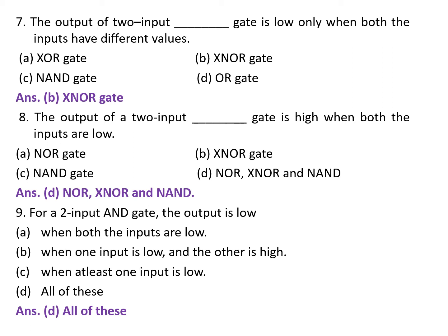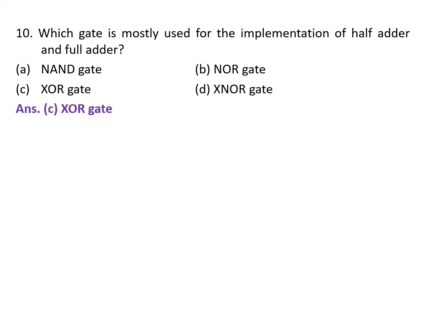Which gate is mostly used for the implementation of half adder and full adder? A. NAND gate. B. NOR gate. C. XOR gate. D. XNOR gate. The correct answer is C — XOR gate.